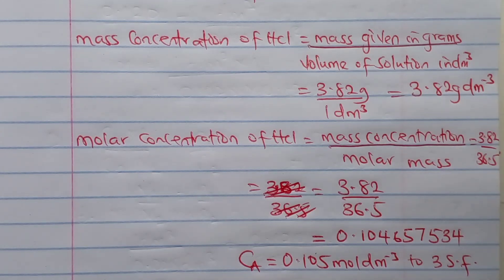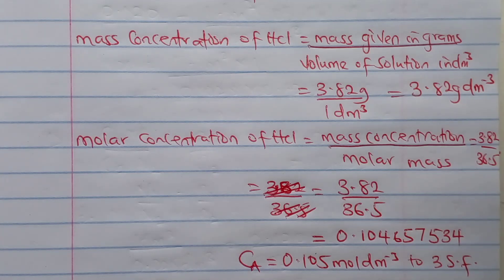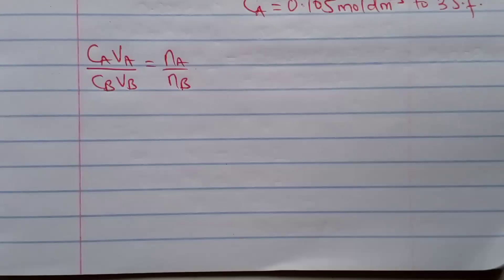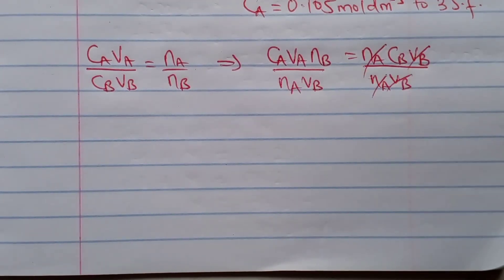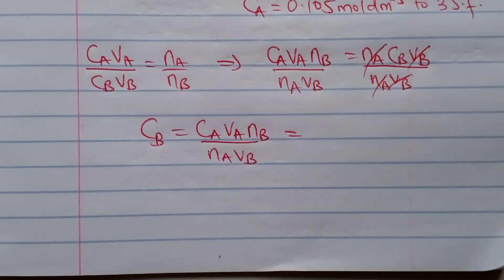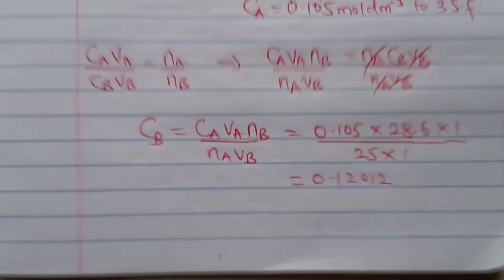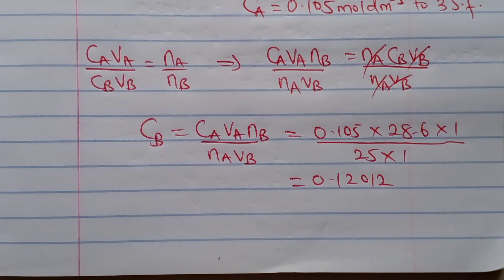From the equation and the CA we have obtained, since we know VA, VB, NA, and NB, we can use the formula CA·VA / CB·VB = NA/NB. Making CB the subject formula, CB stands alone. Asserting the values and leaving the answer to three significant figures, we get the concentration of solution B in mole per dm³.